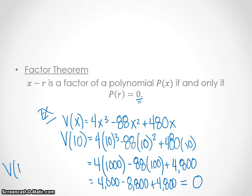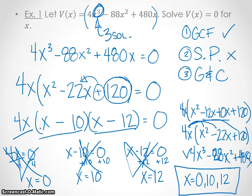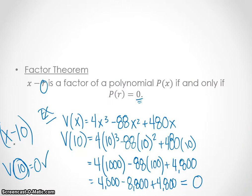So indeed, V of 10 equals 0. Therefore, 10 is a factor. Or rather, 10 is a solution. The factor then would be x minus 10, because that would be r, is a factor of that polynomial. Which, if we go back, it is a factor of that polynomial, x minus 10, we found to factor in. So that does check out.